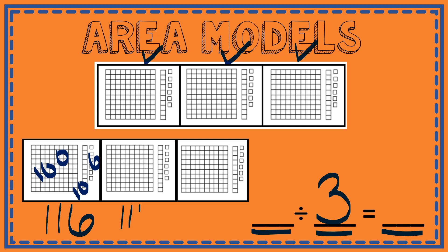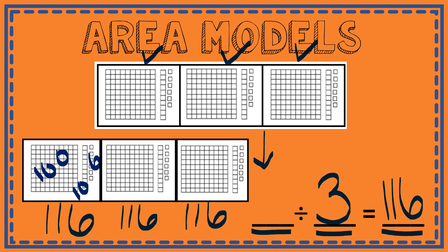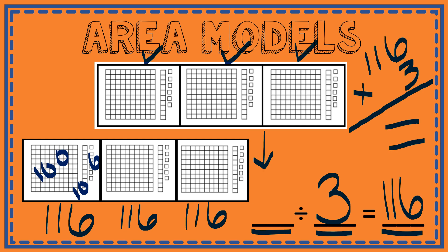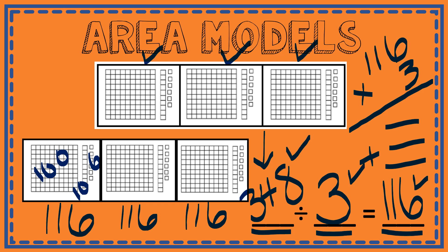So 116 is in each box, in each group. That means my quotient is 116. Now how am I going to find my dividend — that large number that was broken up into three groups? I can take 116 and multiply by 3, or I can add 116 three times. Either way, I get a dividend of 348. So I have my dividend, my divisor, and my quotient.